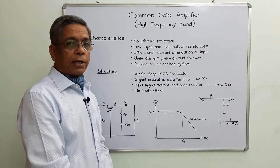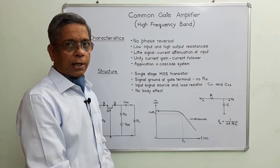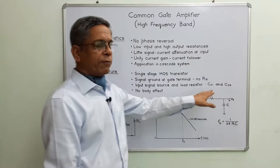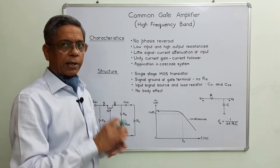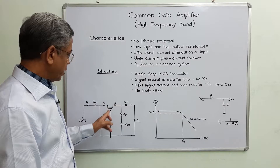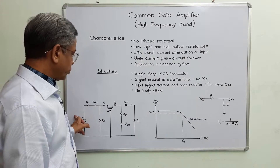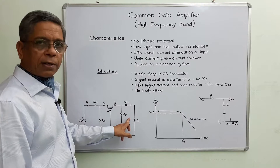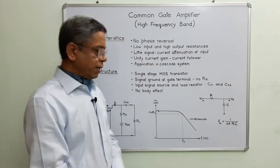As far as the circuit is concerned, the basic structure has a single stage MOS transistor and signal ground is achieved at the gate terminal, so no resistor is connected with the gate terminal. Input signal source and load resistors are connected using high-valued coupling capacitors CC1 and CC2. We assume there is no body effect, meaning body and source terminals are interconnected. CC1 and CC2 are coupling capacitors connecting the input voltage source and load resistor to the device.